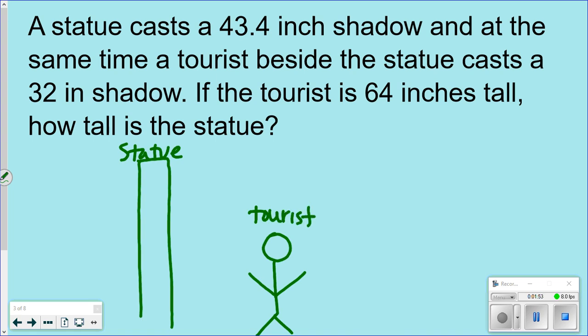Now I'm going to start putting in my measurements. So it says my statue is casting a shadow. So here's my shadow. My shadow is 43.4 inches. And a tourist is casting a 32 inch shadow. So there's 32 inches. And the tourist is 64 inches tall. I want to know how tall the tower is. We could also make that X.